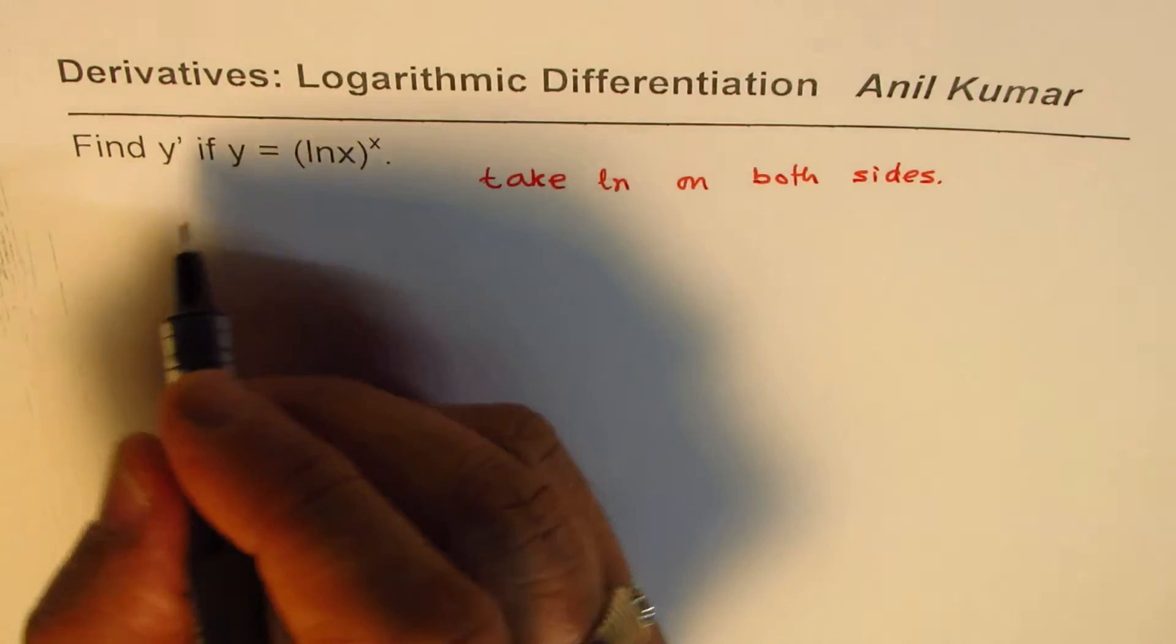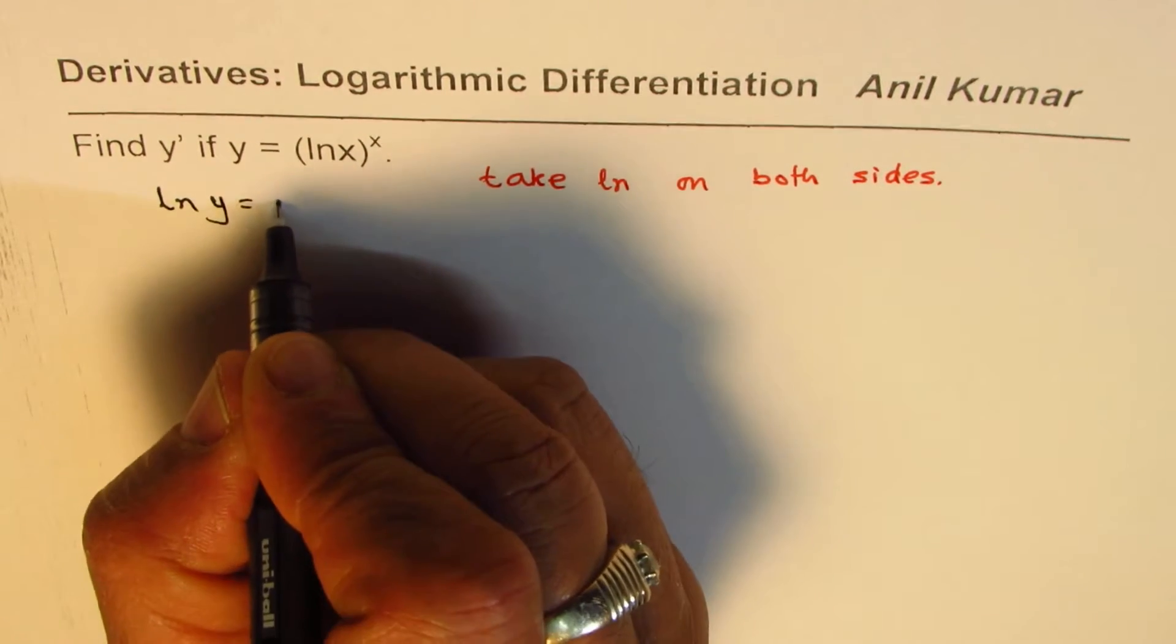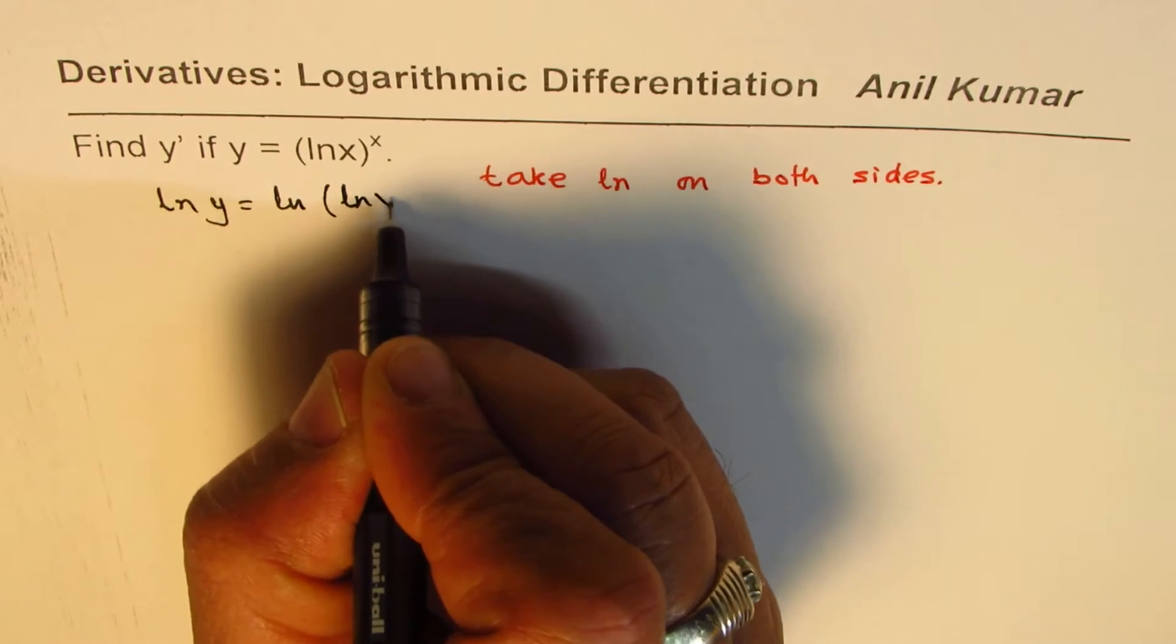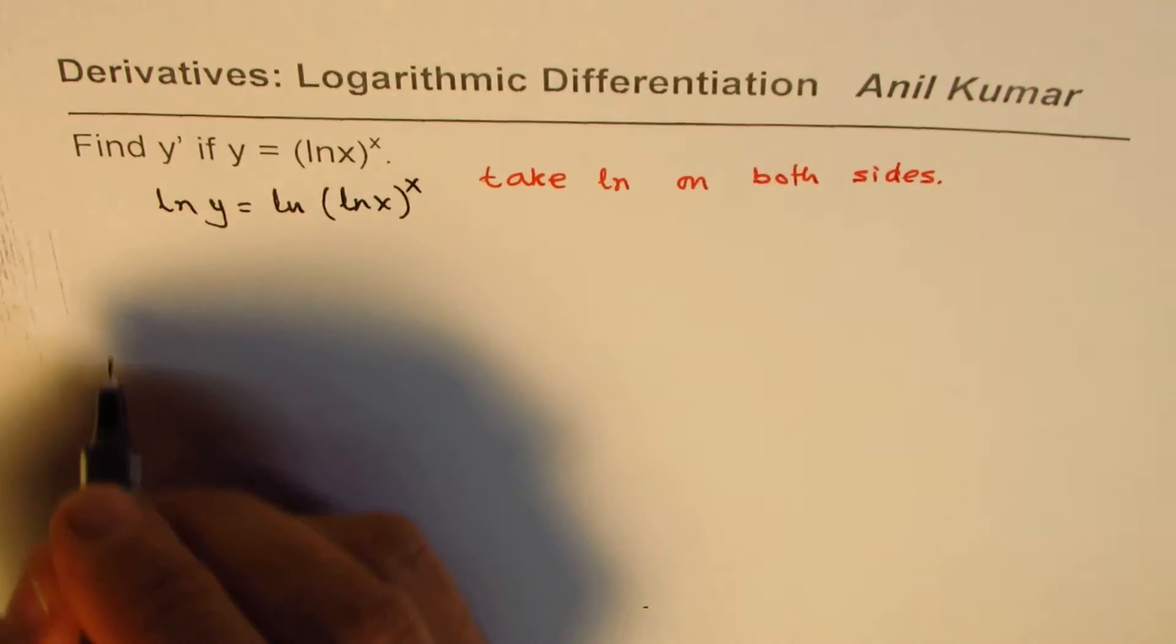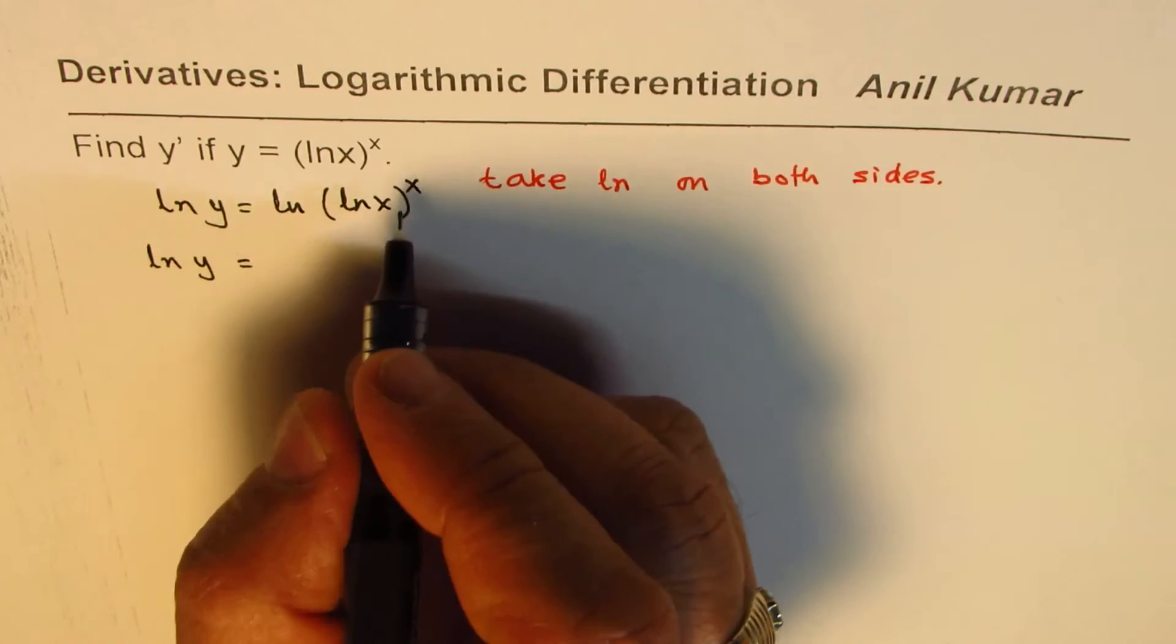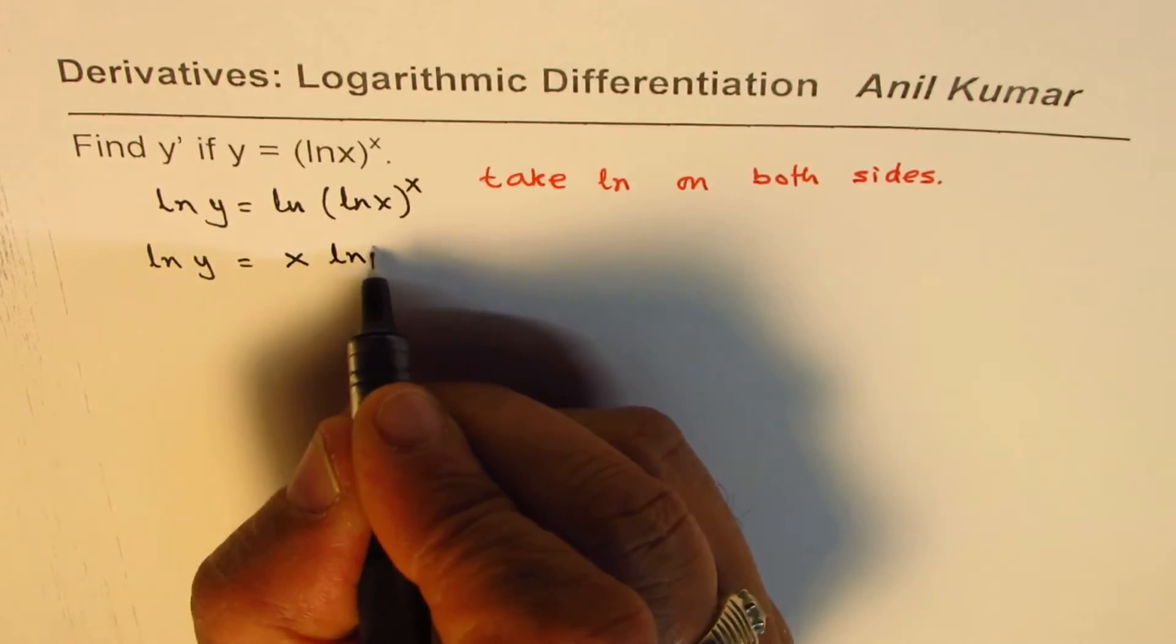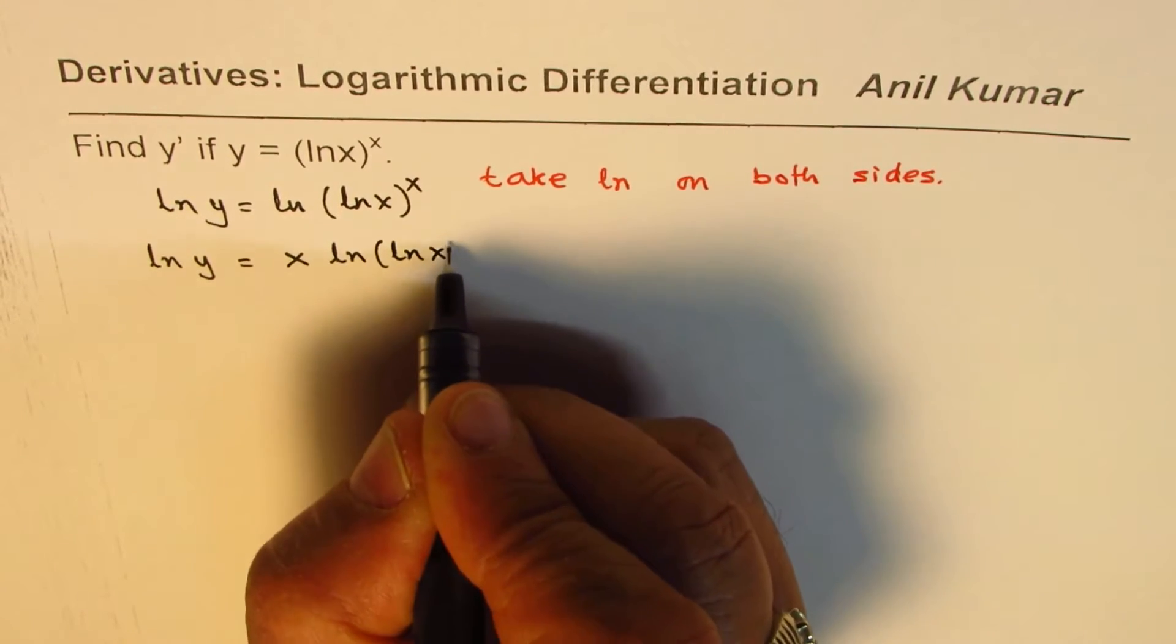So we can write this as ln y equals to ln of ln x to the power of x. Now we can apply the power rule to simplify the right side. So we can write this as x ln of ln x.